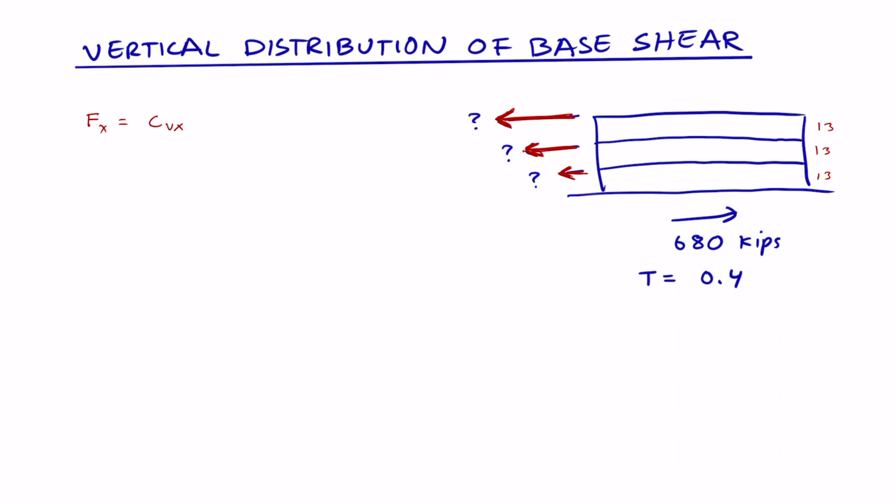Basically, for each level, we'll multiply the base shear by a certain coefficient that we'll find. This is the equation for CVX, but we'll make a table to make this easier to understand.